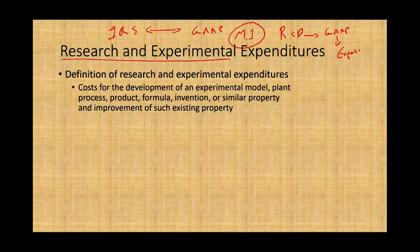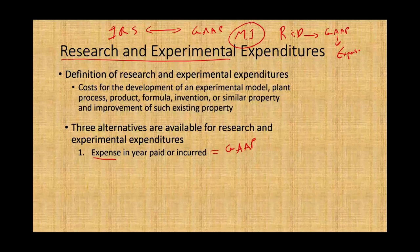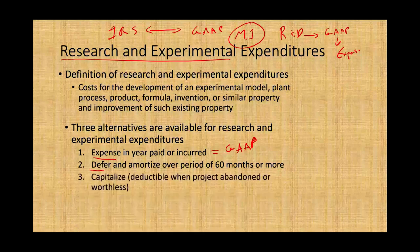Now, how do we deal with research and experimental expenditure for taxes? The IRS and Congress are very liberal — they give you three alternative options. First, you can expense them in the year paid or incurred, which is similar to GAAP treatment since GAAP says there's no future benefit in R&D, therefore you expense it. Second, you can defer and amortize over 60 months — you defer until the project starts to be realized and becomes viable. Third, you can simply capitalize.